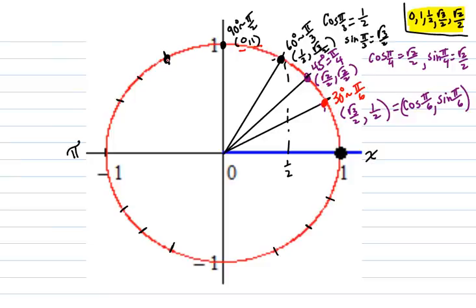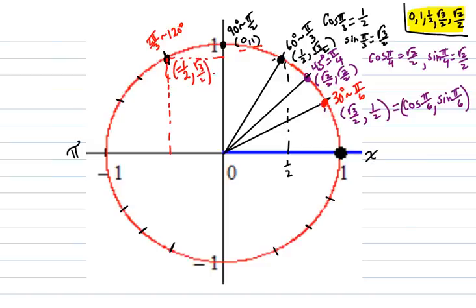Moving over to this point: that's 4π/6, so 2π/3, coterminal to 120 degrees — 30 degrees past 90. The x is negative 1/2, so the cosine is negative 1/2. The y is at about the 0.866 location — that's √3/2, positive. So you let the picture guide you instead of just rote memorizing the values.